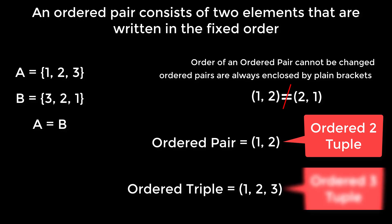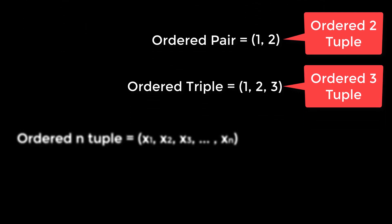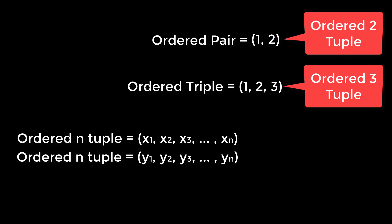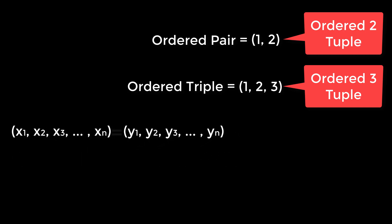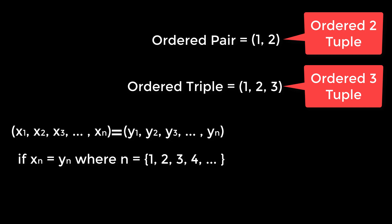Suppose there is an ordered n-tuple (x₁, x₂, x₃, ..., xₙ) and another ordered n-tuple (y₁, y₂, y₃, ..., yₙ). These two ordered tuples will be equal if xₙ equals yₙ where n is in the set {1, 2, 3, 4, ...}.